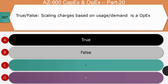True or false: Scaling charges based upon usage or demand is considered as OpEx. The right answer is false — this is a tricky question. In cloud, auto-scaling brings additional memory or storage in or out dynamically based on demand. For the customer it is a cloud service provider feature, so it is classified as operational expenditure. However, if scaling happens on-premises by physically adding memory or storage to existing hardware, that is a server alteration and should be treated as capital expenditure.